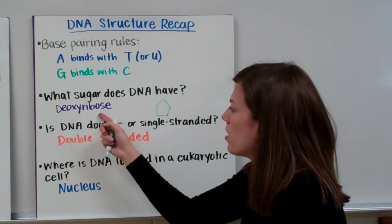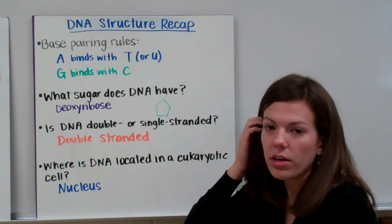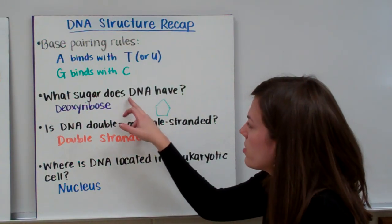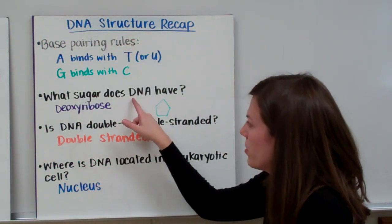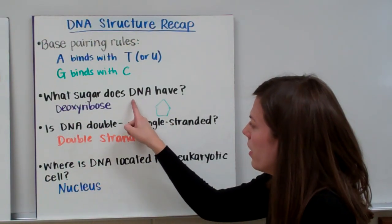If you'll remember, "-ose" the suffix means that it's a sugar, or usually is a sign that what you're talking about is a sugar. And also DNA starts with a D because it stands for deoxyribonucleic acid. So deoxyribose, DNA.